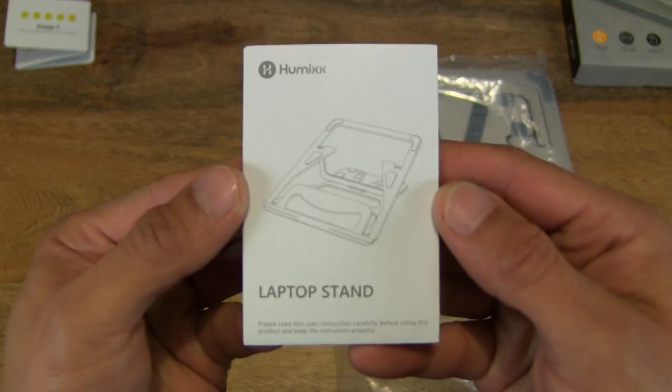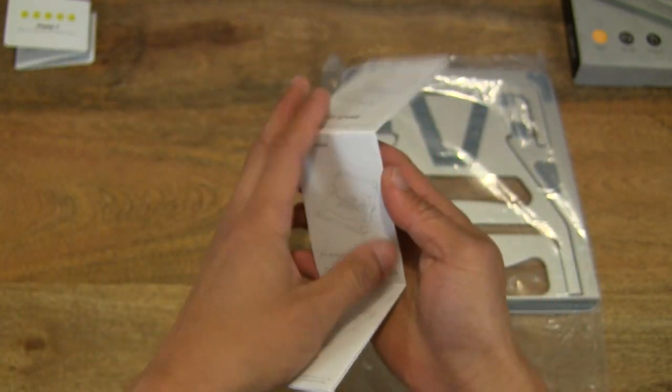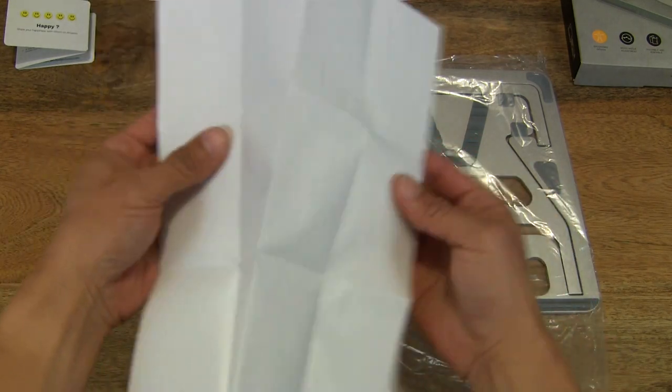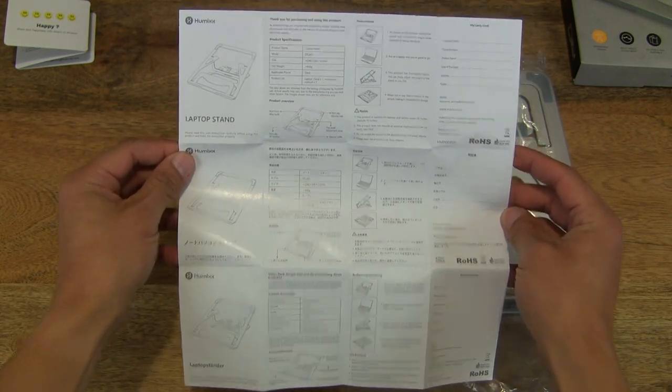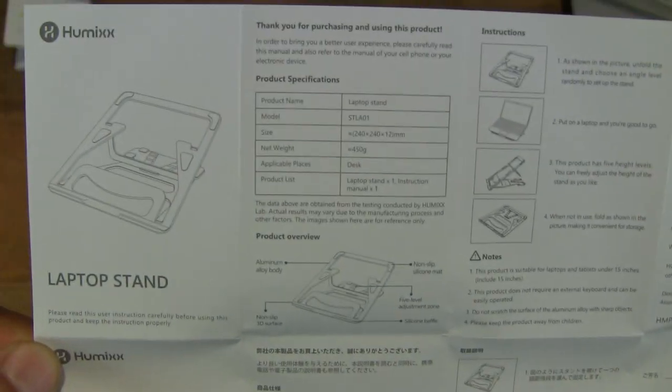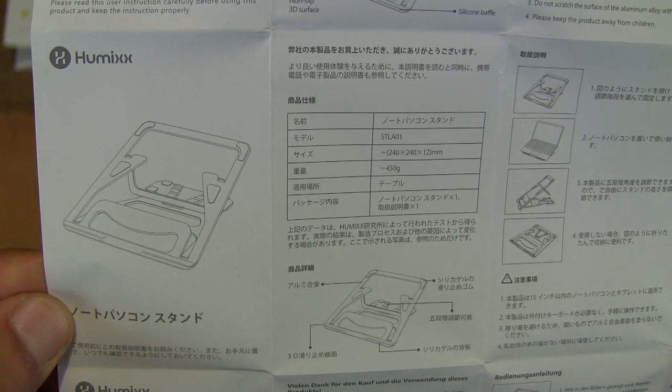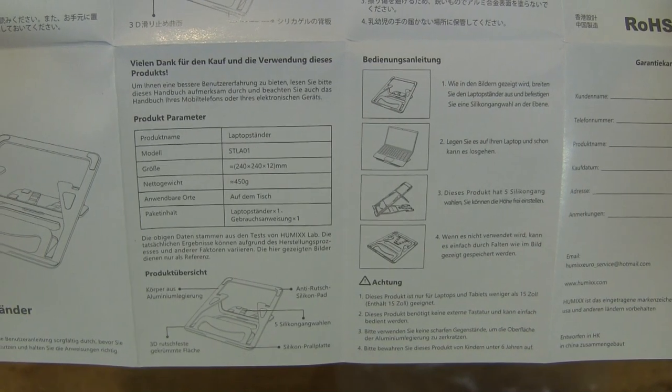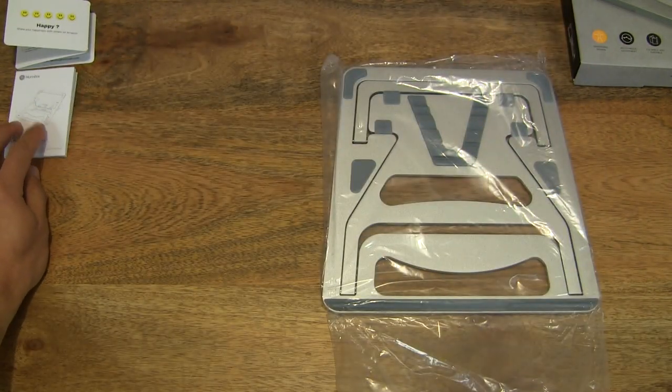This appears to be a user manual or user guide or instruction manual for the Humix laptop stand. So let's go ahead and open it up. So it is also a fold-out user manual or user guide. So it folds out across and then top to bottom as well. And on the reverse side it is blank. So it is a single-sided fold-out sheet here. And it appears that there are instructions in several languages. Let's take a close-up look for your reference. So right there appears to be English instructions, and then in the middle row appears to be Japanese, and then lastly appears to be German. Okay so that's the user manual. We can set that down as well.